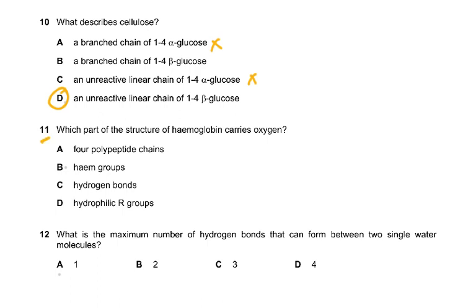Question 11: Which part of hemoglobin carries oxygen? Everybody knows it is the heme groups — the Fe²⁺ ion in the heme group binds to the oxygen and carries it.